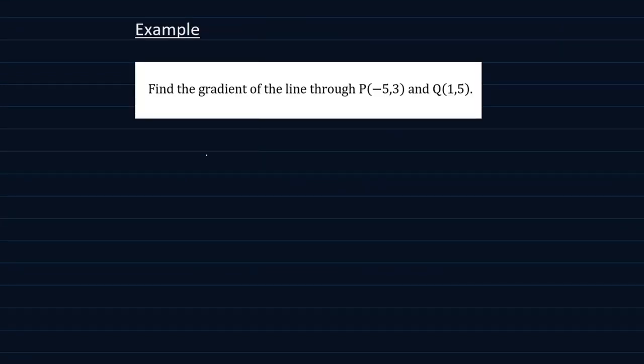Now let us look at this example here. It goes find the gradient of the line through P which has coordinates (-5, 3) and Q which has coordinates (1, 5).